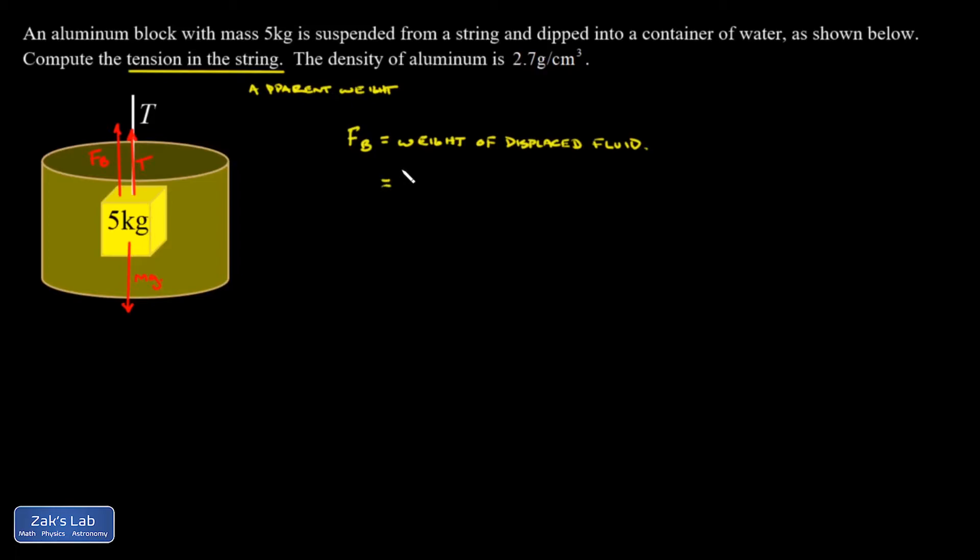volume of water out of the way equal to the volume of the block. When I multiply that volume by the density of water, that gives me the mass of the water that's been pushed out of the way. When I multiply that by g, I get the weight of the water that's been pushed out of the way. So it looks like I have a missing piece of information—I've got to find the volume of the block. We